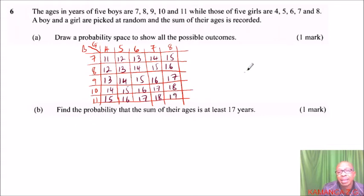Looking at part B, and there you get one mark. Find the probability that the sum of their ages is at least 17 years. So at least here means the minimum.